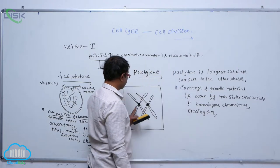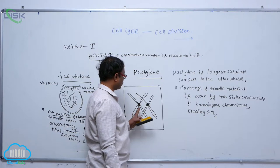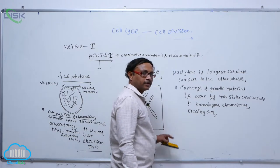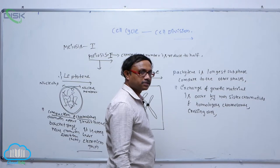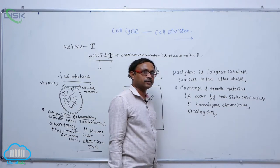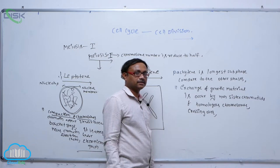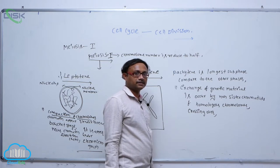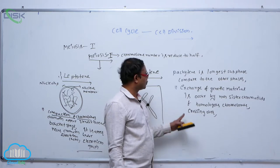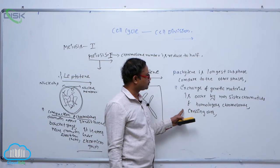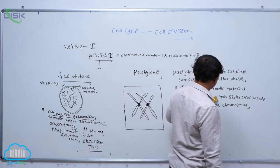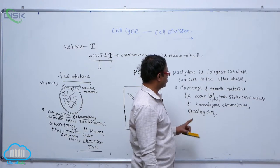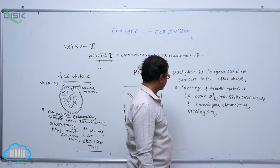Sister chromatids are those which belong to the same homologous chromosome. Chromatids that belong to different homologous chromosomes are known as non-sister chromatids. Exchange of genetic material occurs between non-sister chromatids of homologous chromosomes.